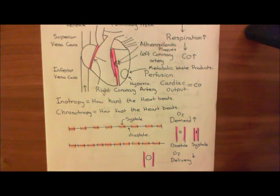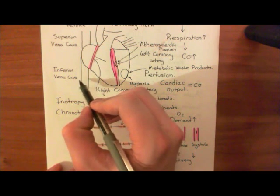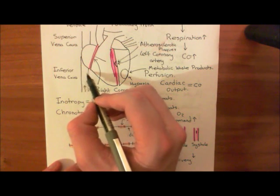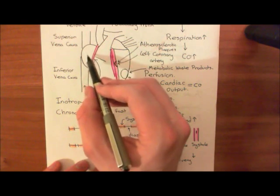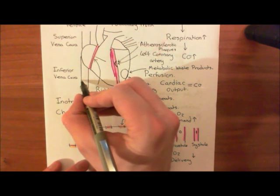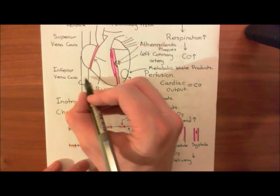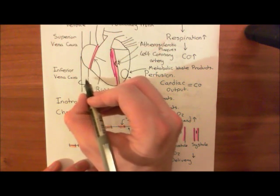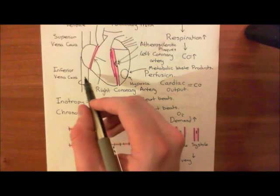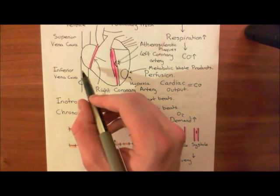Instead, the way we think they work is by causing vasodilatation of the venous reservoir — these massive great veins containing the venous blood being returned to the right atrium. Basically, they vasodilate the large veins of the body, which causes the pressure of the blood in these veins to go down.